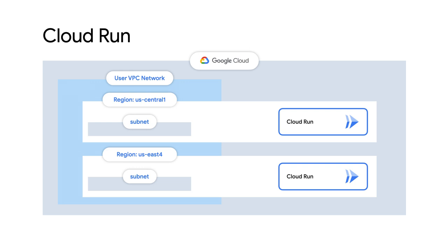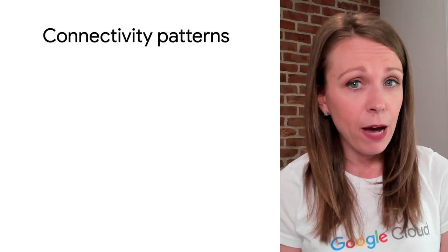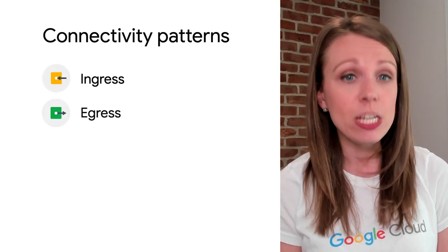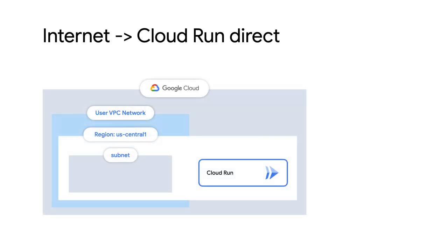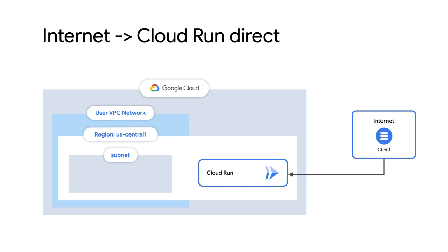Let's dig into the connectivity patterns, focusing on ingress and egress. Starting with ingress: by default, when you deploy to Cloud Run, you're given a URL that can be routed on the internet. The URL will always be resolvable on the public internet. However, by default, services refuse all requests unless IAM is configured for the service. Ingress configuration and authentication parameters can be set to change access patterns, and we'll dig more into these settings when we talk about security.